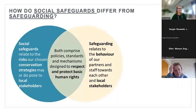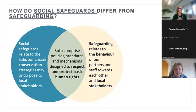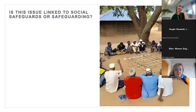You may have heard the term 'safeguarding.' Social safeguards and safeguarding are sometimes used interchangeably, but they're actually different things. Both are concerned with respecting and protecting basic human rights. But social safeguards relate to the risks our chosen conservation strategies may or do pose to local stakeholders, whereas safeguarding relates to the behavior of our partners and staff towards each other and towards local communities. Perhaps looking at some examples will make this distinction clearer.